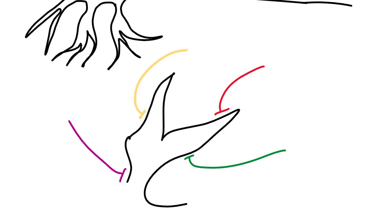We'll say the green, red, and yellow are all excitatory — putting an E for excitatory. The purple one is inhibitory. So if action potentials are traveling down the excitatory neurons and getting to these presynaptic membranes, what you're going to get is depolarization right here — depolarization of the membrane here, depolarization of the membrane here, and depolarization of the membrane here.